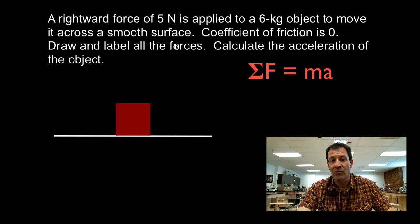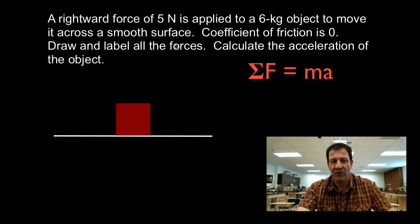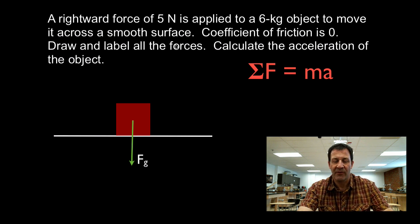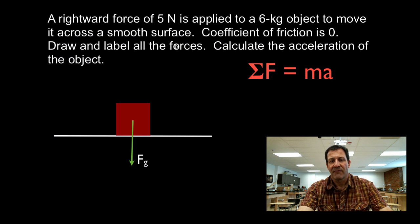The first force we're going to draw is the force of gravity. We'll assume that all these objects are near the surface of the earth, and therefore there is the gravitational force. The gravitational force points downwards — we label that Fg. Now, it's moving across the surface, not moving down through it or upwards, so we can assume we have a normal force. The normal force is the force from the surface acting on the object in the opposite direction, and we label that Fn.